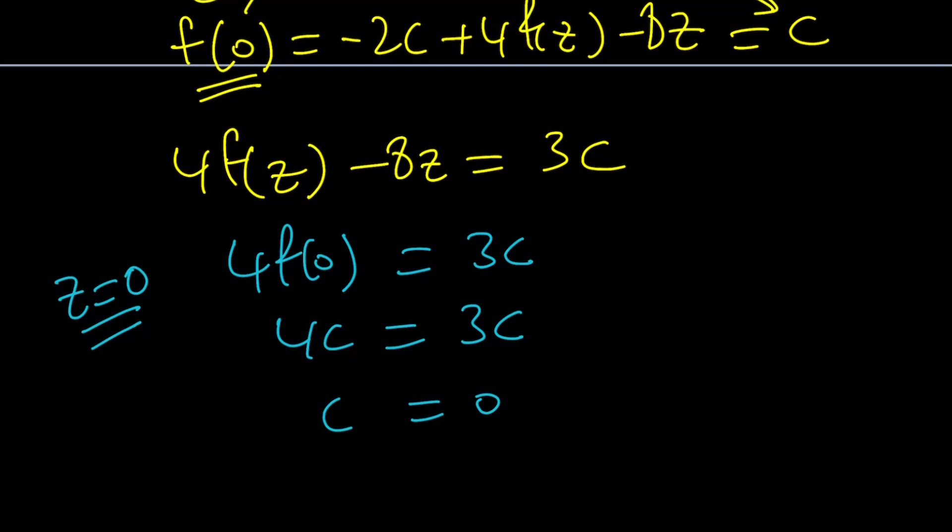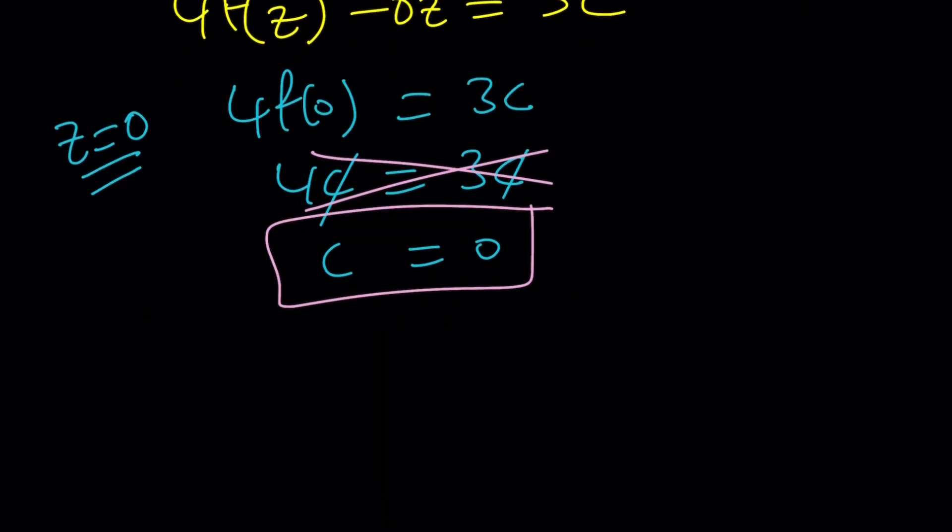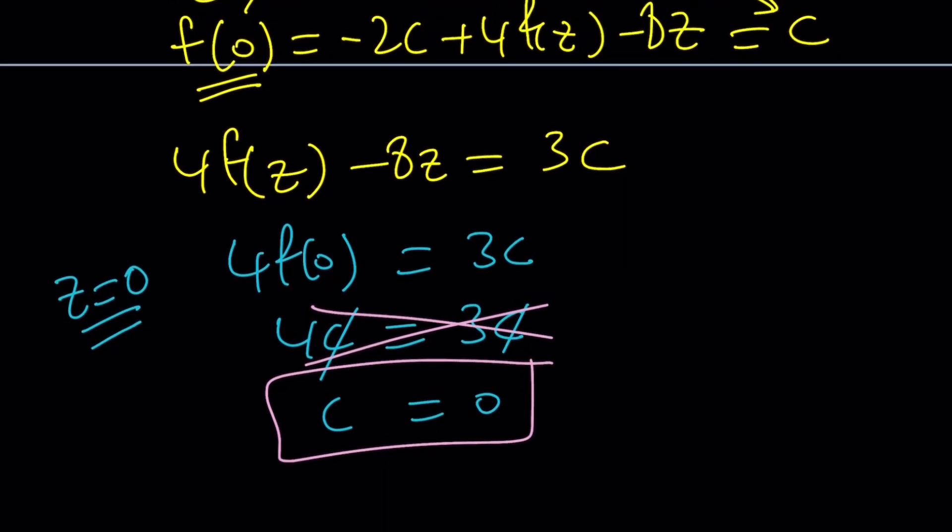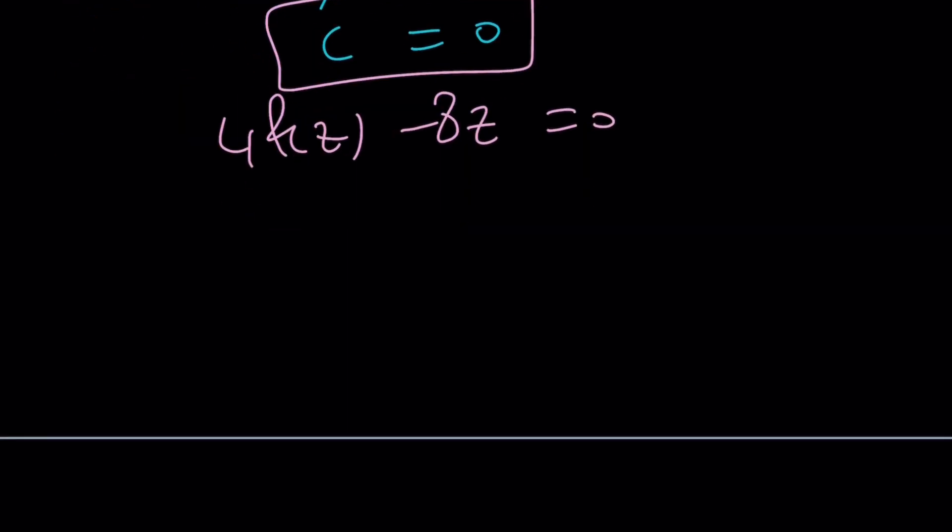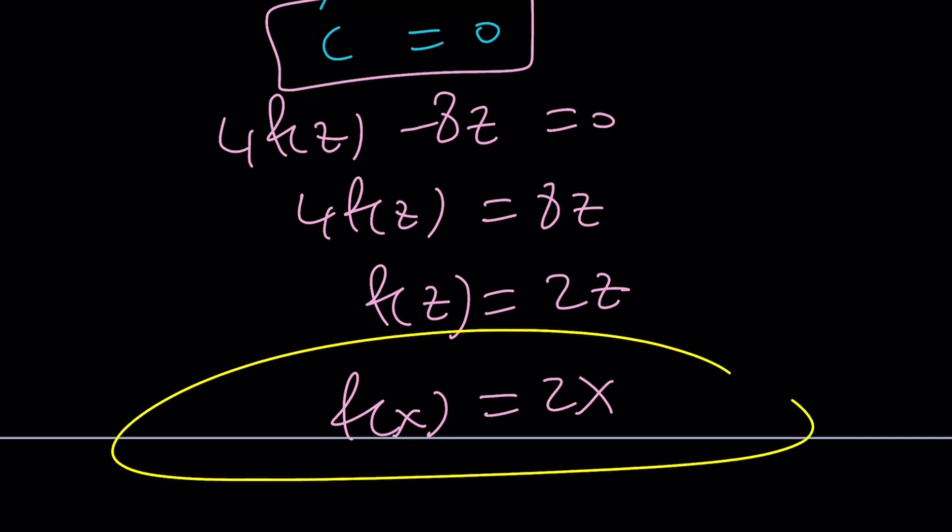Obviously, 4 equals 3 is wrong, right? This is definitely a wrong way to do it. Don't do it like that. c equals 0. And we got f of, wow, when c is equal to 0, we're going to get 4f of z minus 8z equals 0. Because 3 times 0 is 0. And this gives us 4f of z equals 8z, which is f of z equals 2z or not 2z. And you can just replace z with x if you want to get everything in terms of x. And that'll bring us the exact same solution. So 2z or not 2z. That's the problem.